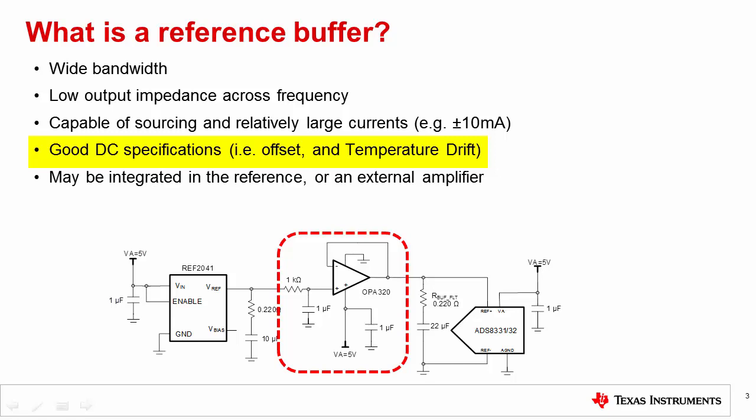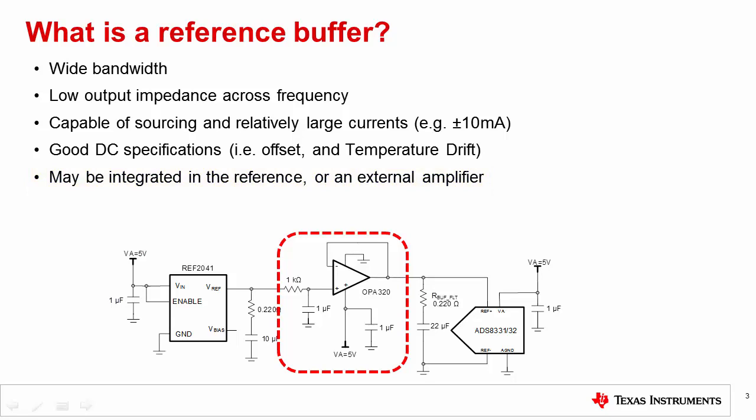Also note that any reference buffer will need to have good DC performance — that is, low offset and offset drift. Finally, the reference buffer can be integrated into the reference, or it may be an external amplifier. Note that all series voltage references will have some type of internal buffer. In many cases, however, this buffer doesn't have sufficient bandwidth or current drive capability to directly drive an ADC reference input and achieve good settling performance. Thus, when we refer to a reference buffer in this presentation, we are specifically referring to a wide bandwidth buffer capable of driving a SAR ADC reference input and achieving good settling.